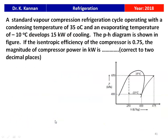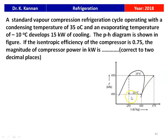The next question is from the 2018 question paper. A standard vapor compression refrigeration cycle operates with a condensing temperature of 35 degree Celsius and evaporating temperature of minus 10 degree Celsius, developing 15 kilowatts of cooling. The isentropic efficiency of the compressor is 0.75. From the P-H diagram, the enthalpy at the evaporator outlet is 400 kJ/kg, at the evaporator inlet is 250 kJ/kg, and at the compressor outlet is 475 kJ/kg.